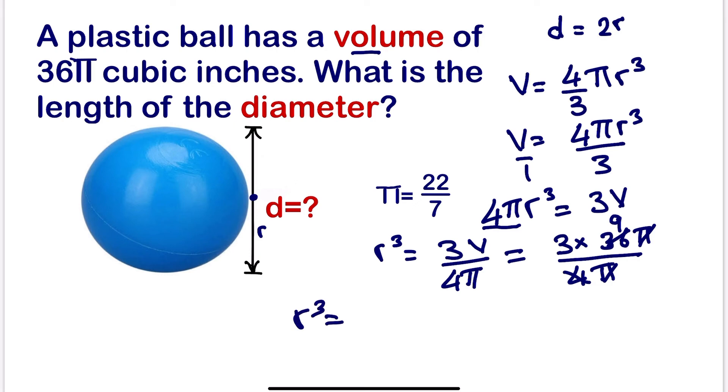This implies if we want to calculate r, r equals the cube root of 27. The cube root of 27 is 3. This implies r is equal to 3 inches.